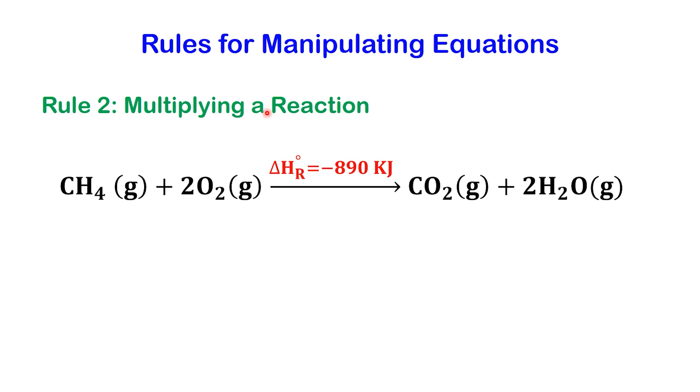When we multiply all the substances in an equation by a number, we must also multiply delta H by that same number. The enthalpy change scales with the amount of reactants and products. For example,